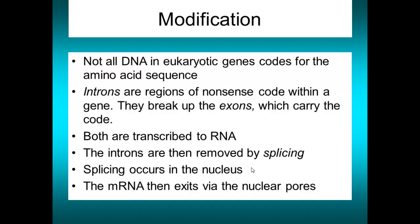Modification is a step that does not occur in prokaryotes but does occur in eukaryotes, and it is extremely important. Introns, as discussed in DNA fingerprinting, are regions of nonsense code within a gene. They space out the exons, and it is the exons which carry the code. Both introns and exons are transcribed to RNA, and then the introns are removed from the RNA by a process called splicing. Once those introns have been spliced out, the RNA is defined as mRNA and is allowed to exit through the nuclear pore.